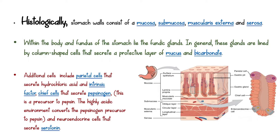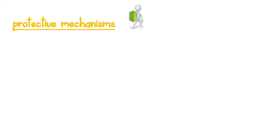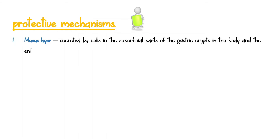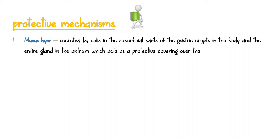As discussed earlier, the stomach secretes powerful acids and proteolytic enzymes to help digestion of food. These have the capacity to produce gastric mucosal injury and digest the stomach itself. This is prevented by the following protective mechanisms. The mucus layer is secreted by cells in the superficial parts of the gastric crypts in the body and the entire gland in the antrum, acting as a protective covering over the mucosal surface. The pH of the mucous layer is maintained at a near-neutral level.